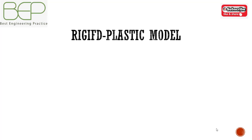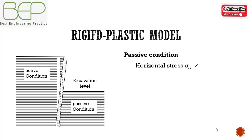As the wall moves towards the ground, the horizontal pressure increases while the vertical stress, which is controlled by self-weight and friction on the wall, remains fairly constant as the wall moves toward the ground.